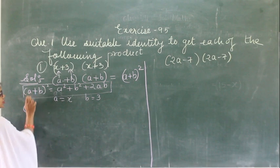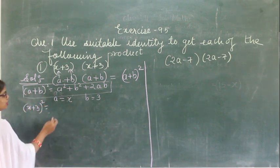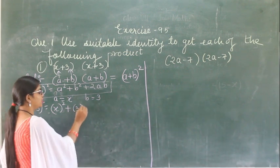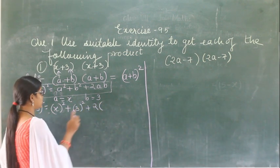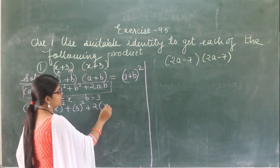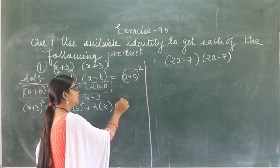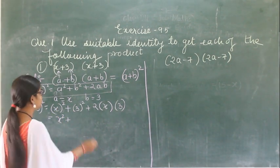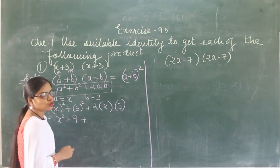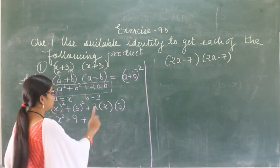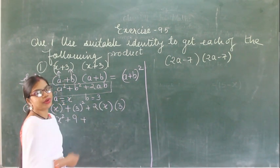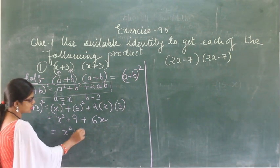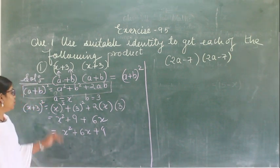So just substitute the value of a and b in the formula. From here I can write down: (x plus 3) whole square is equal to a square, that is x square, plus b square, that is 3 square, plus 2ab, which is 2 into x into 3. We get x square plus 9 plus 6x. Writing in systematic order: x square plus 6x plus 9. This is the answer.